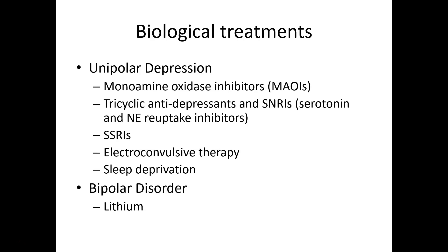Now we're going to move on to different biological treatments. Given the wide range of potential causes of depression and the various symptoms people have, not every treatment is going to be equally effective for every person. There are different forms of mood disorders and different types of symptoms. For the two major mood disorders — major depression and bipolar depression — there are several common biological treatments: MAOIs, tricyclic antidepressants, SNRIs, electroconvulsive therapy, sleep deprivation, and lithium for bipolar disorder.